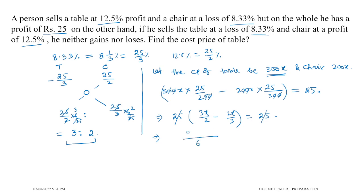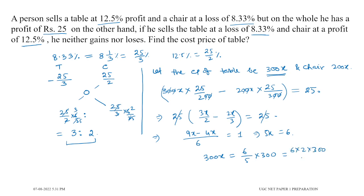We have 9 minus 4x equal to 1, giving us 5x equal to 6. So 300x equals 6 by 5 into 300, which we compute by multiplying: 5x equals 10.